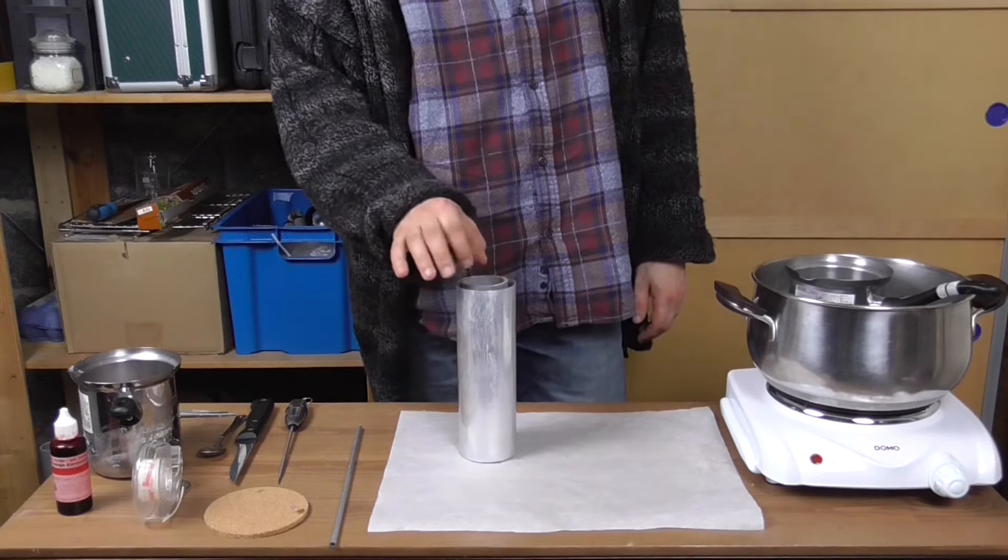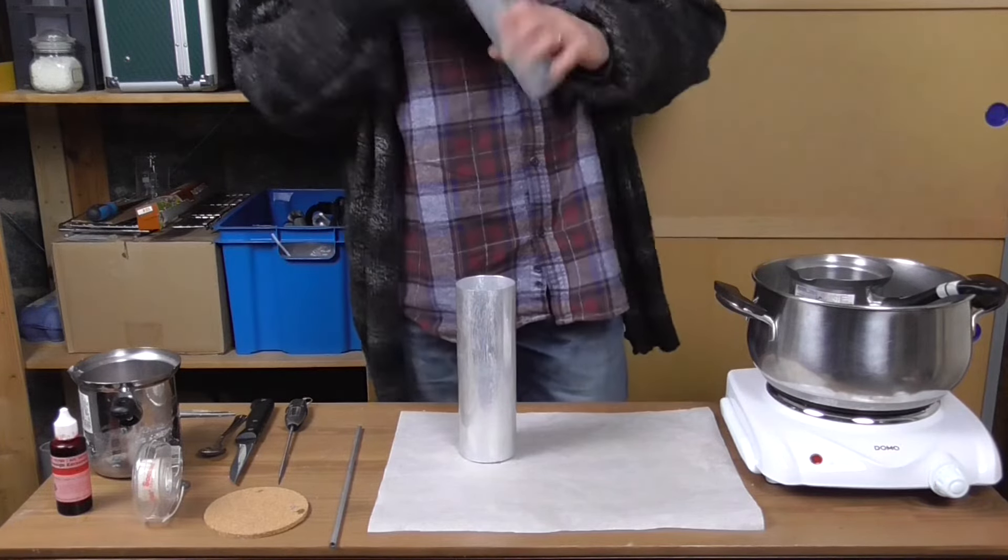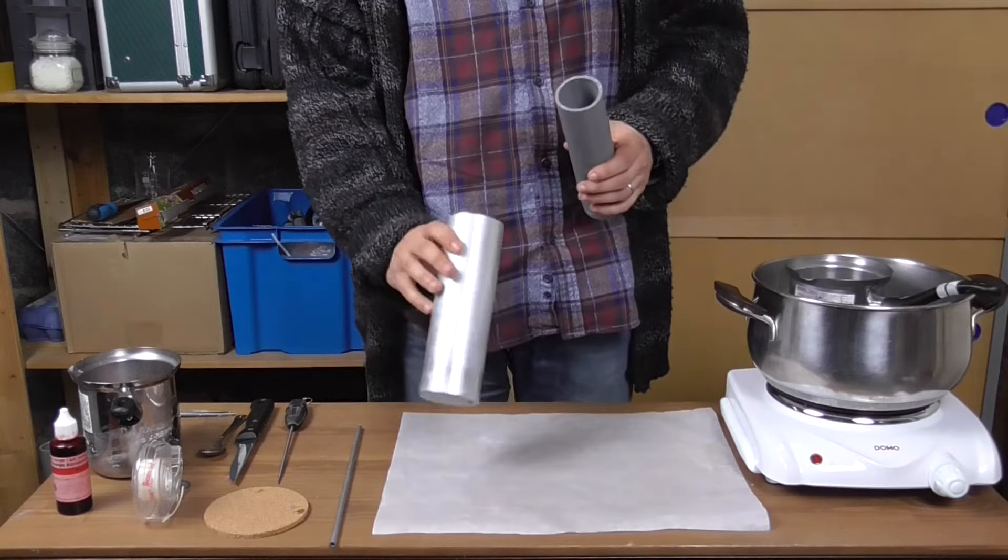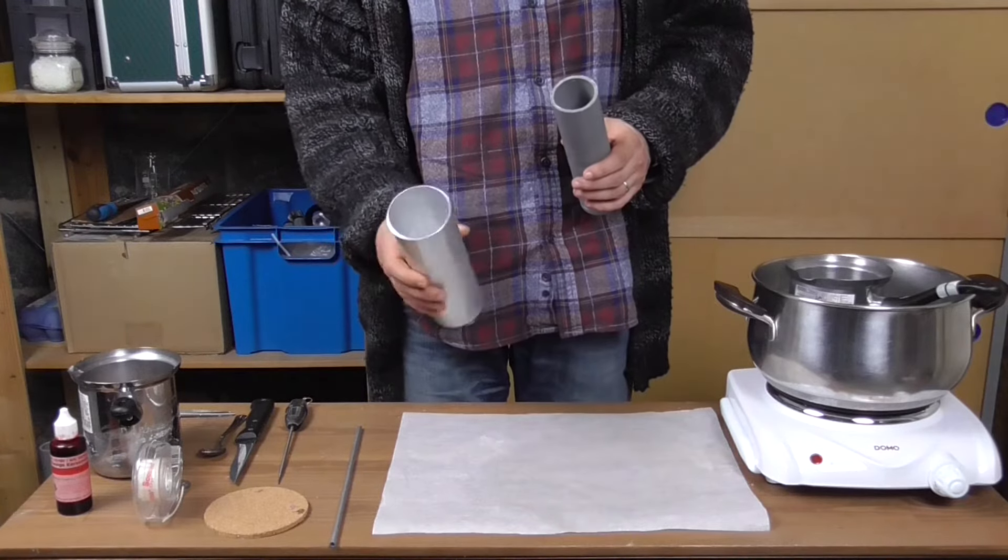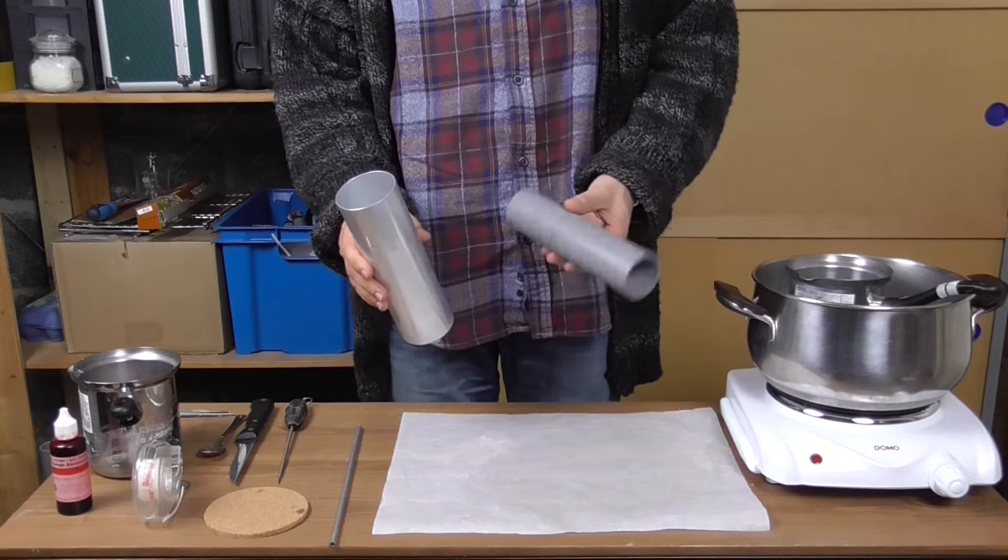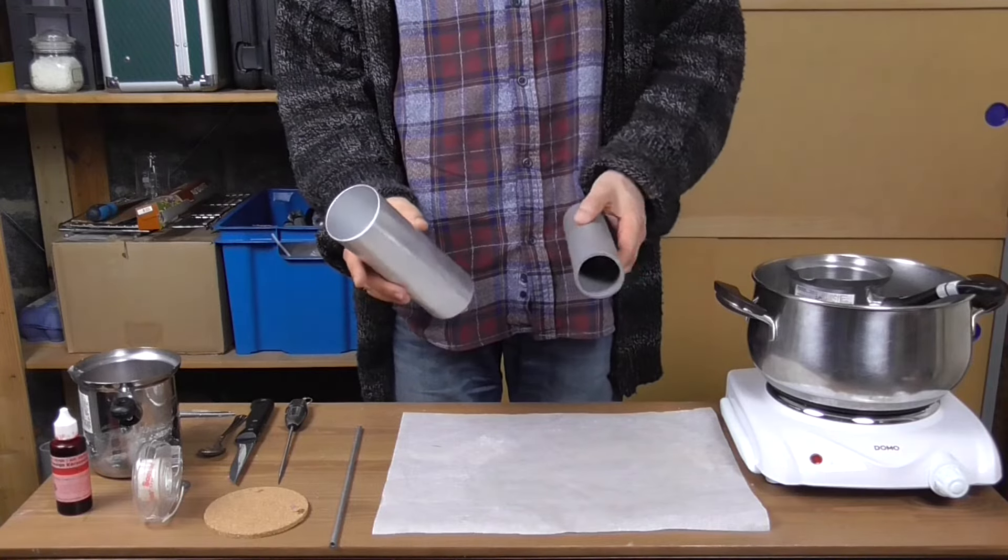Okay, let's start making the shell. For that, you will need a mold and an insert. For this project, I'm using a pillar mold, aluminum, and a piece of PVC pipe as an insert.